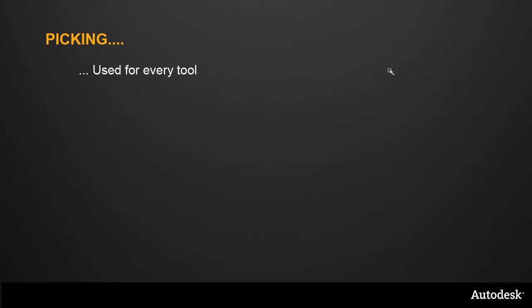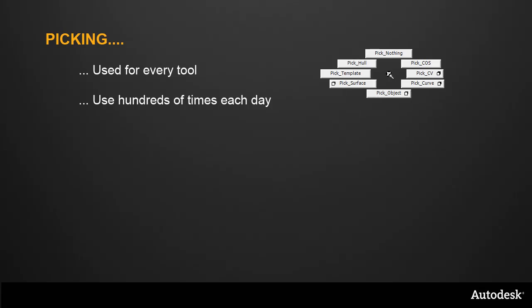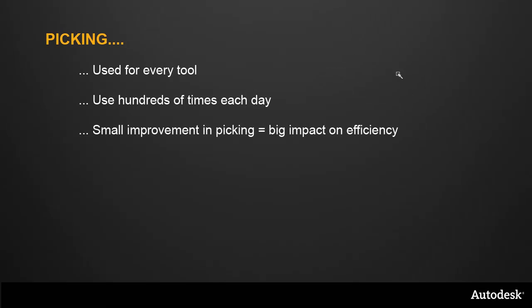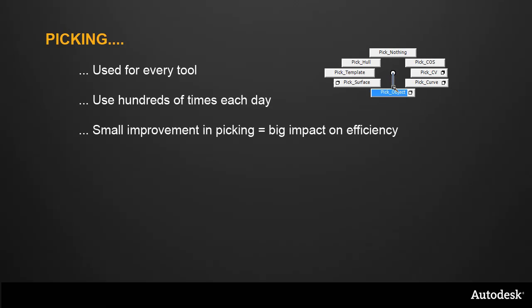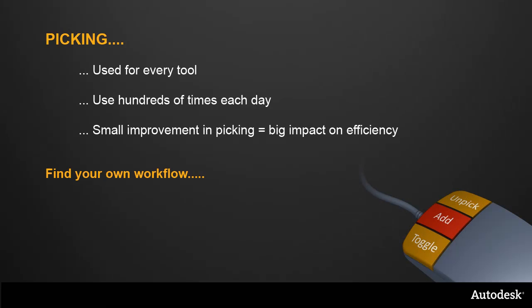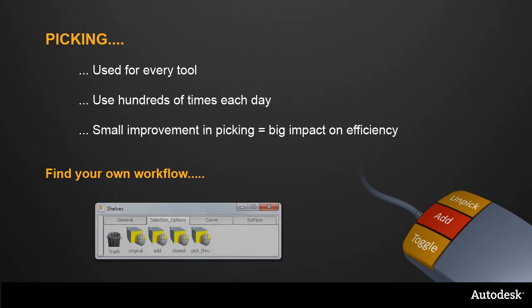Picking and selecting is something we use with almost every tool, hundreds of times each day. Even a small change in picking can mean a significant improvement to our overall efficiency. When you first open Alias 2011, the mouse keys will be set up with the new Add function. I would encourage you to experiment with all the new selection options, and to use the shelves or marking menus to switch quickly between them, until you find the best combination for your workflow.